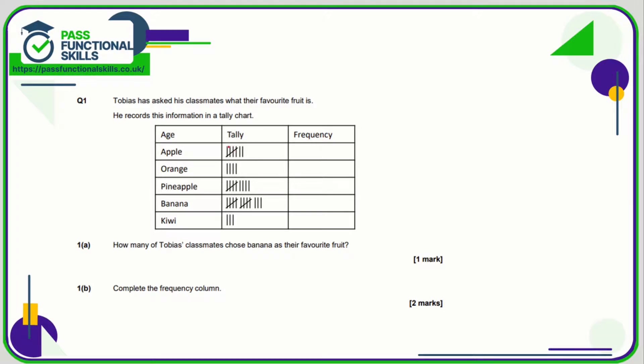Well, all we need to remember is that each complete batch is five. So here we've got five plus two more, so that's seven. One, two, three, four for orange. Five plus four, which is nine here. Five, ten, eleven, twelve, thirteen, and three for kiwi.